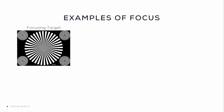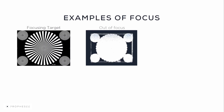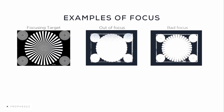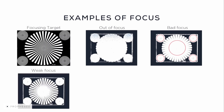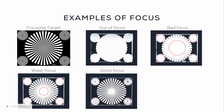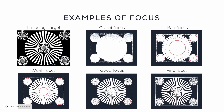Here we'll show you some examples of good and bad focus. The blinking pattern is used as our focusing target. When the camera is out of focus, the target is very blurry. Bad focus means that we can only see a few edges in the central star. A weak focus means we can see the central star better, but still not the small stars in the corners. Good focus means we can see almost all of the edges in the small stars in the corners. And fine focus means we can see maximal edges in all the stars, including the thinnest edges.